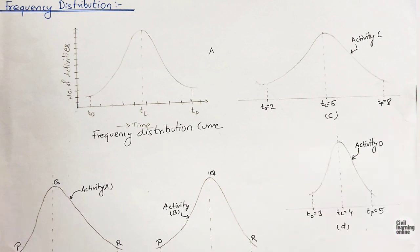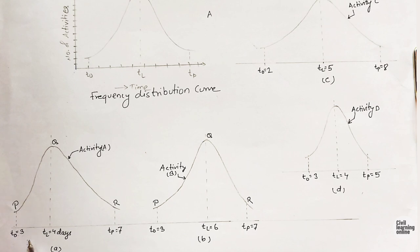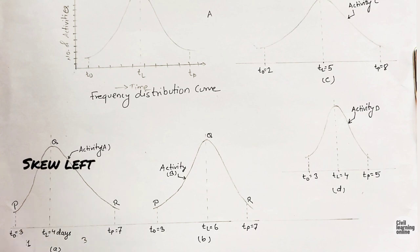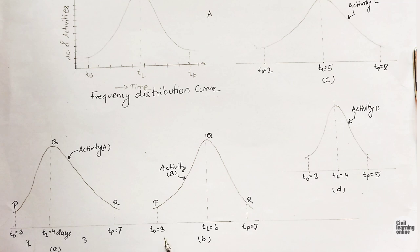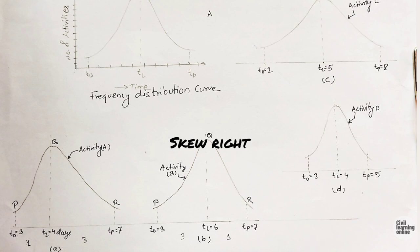Looking at frequency distribution curve diagram A, the difference between tL and t-naught is one, and the difference between tL and tP is three — so this curve is called a skew-left curve. For diagram B, the difference between tL and t-naught is three, and the difference between tL and tP is one — so this curve is skew-right.